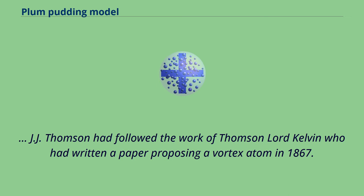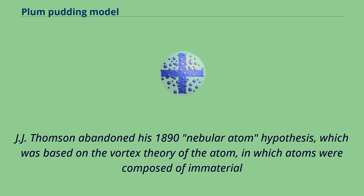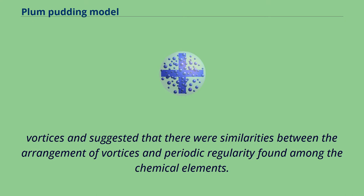J.J. Thomson had followed the work of Lord Kelvin, who had written a paper proposing a vortex atom in 1867. J.J. Thomson abandoned his 1890 nebular atom hypothesis, which was based on the vortex theory of the atom in which atoms were composed of immaterial vortices, and suggested that there were similarities between the arrangement of vortices and the periodic regularity found among the chemical elements.